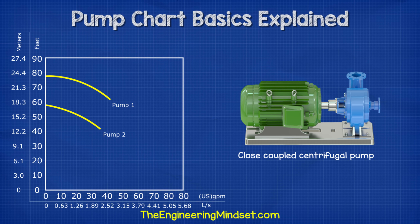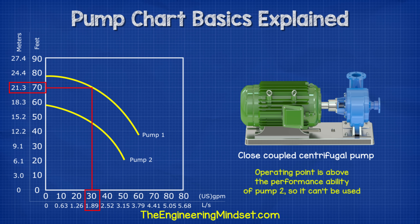For example, the performance curves of two large centrifugal pumps are plotted here. We need a flow rate of 30 gallons per minute and a head pressure of 70 feet. That means that pump two can't be used, but pump one could be.